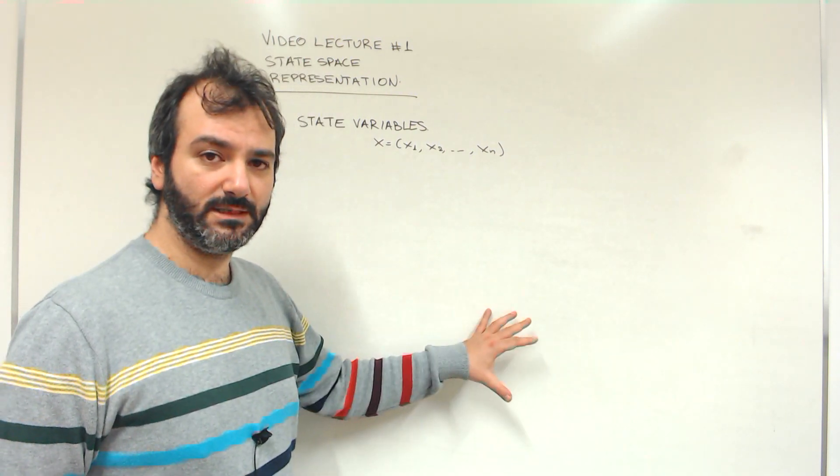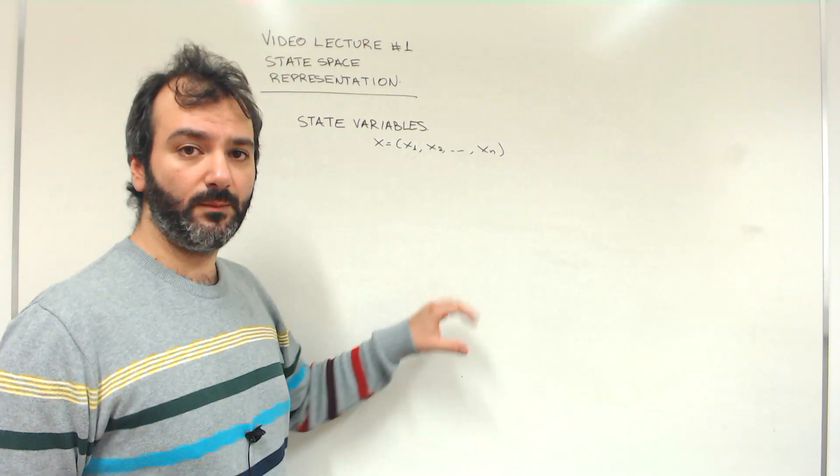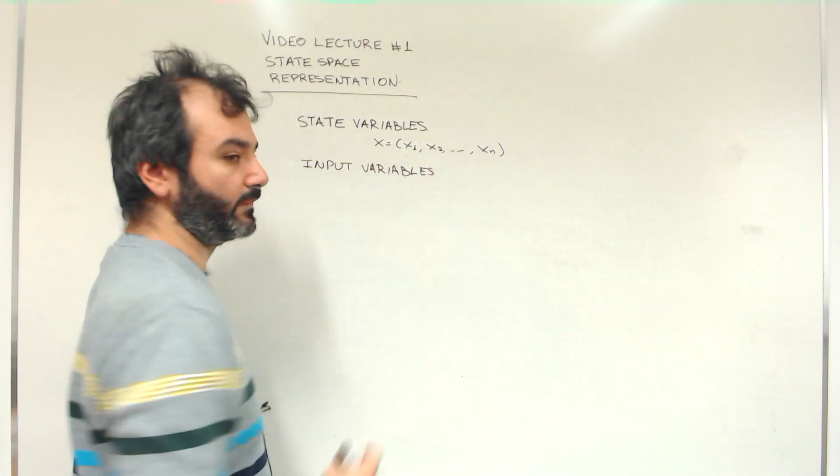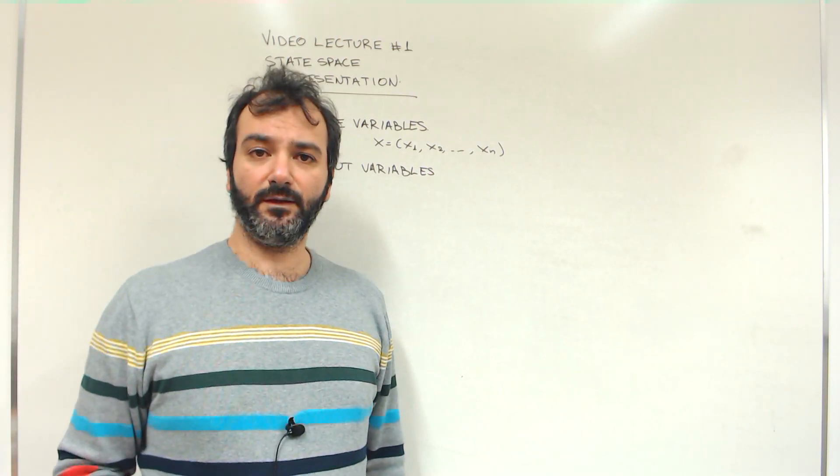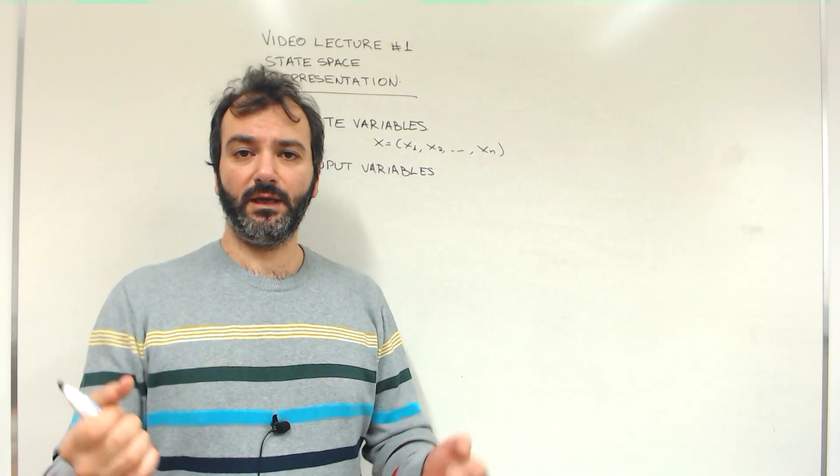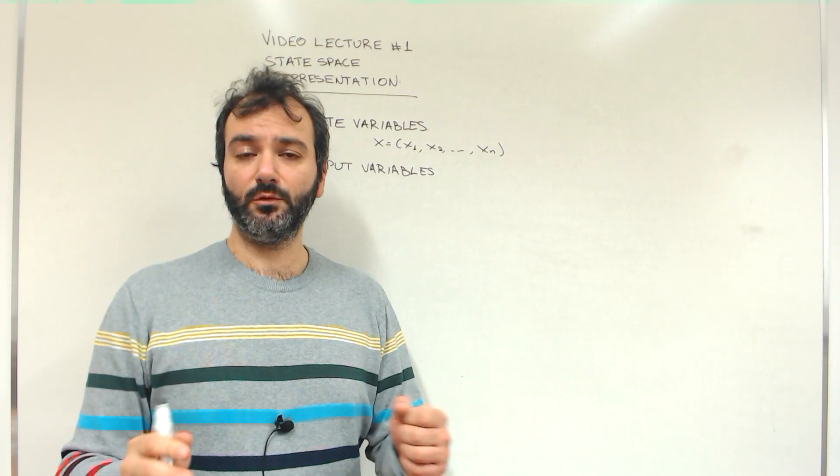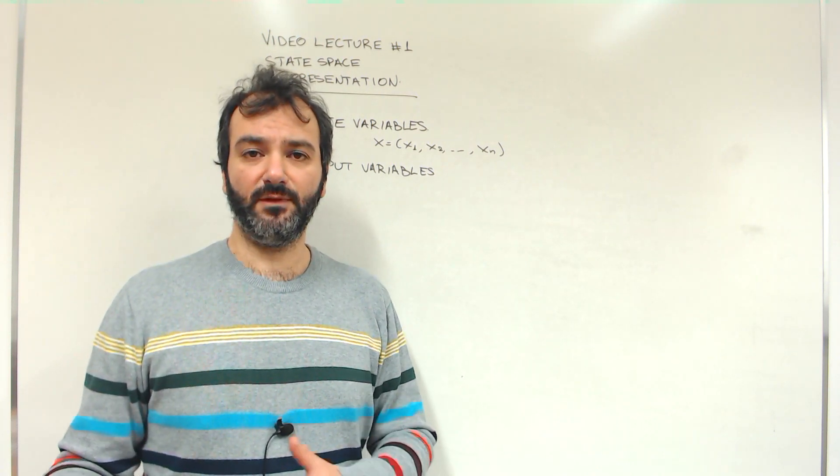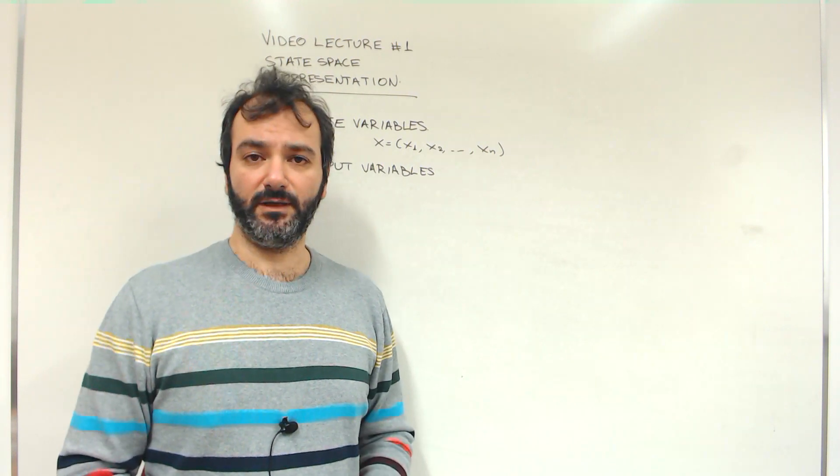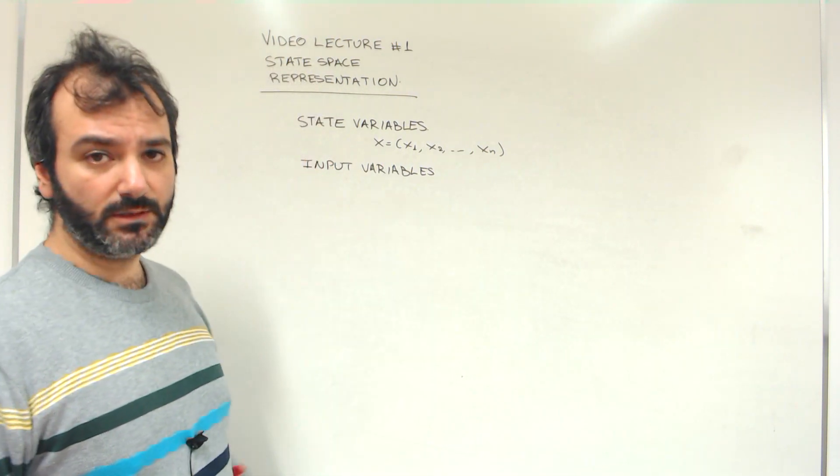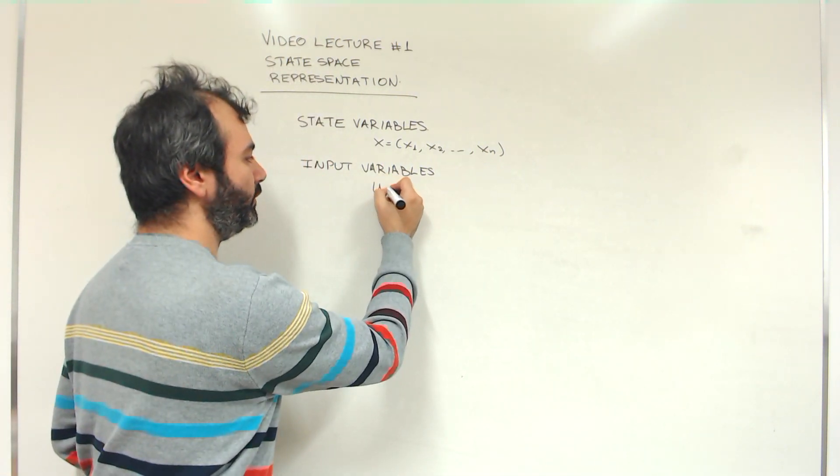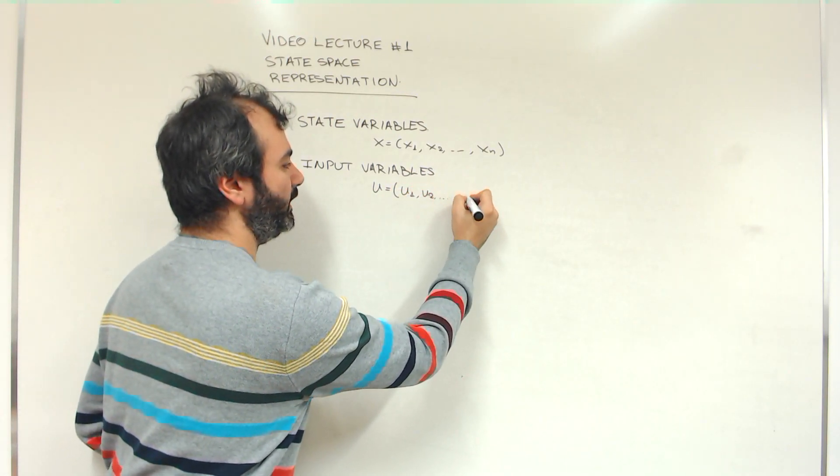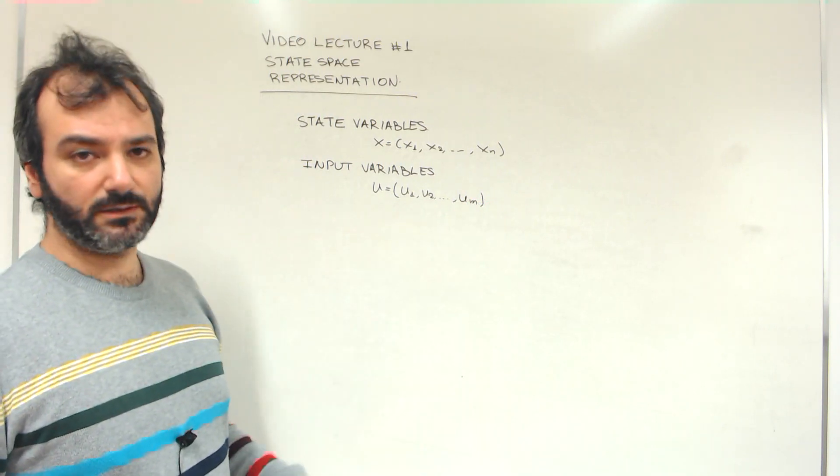We can affect the system's behavior through some input variables. In the example of the car driving on the motorway, we can turn the steering wheel or accelerate or decelerate. This way we can change the position, velocity, and orientation of the vehicle. We have the input variables typically denoted by u. Again, this is a vector, meaning that we can have more than one input variable.